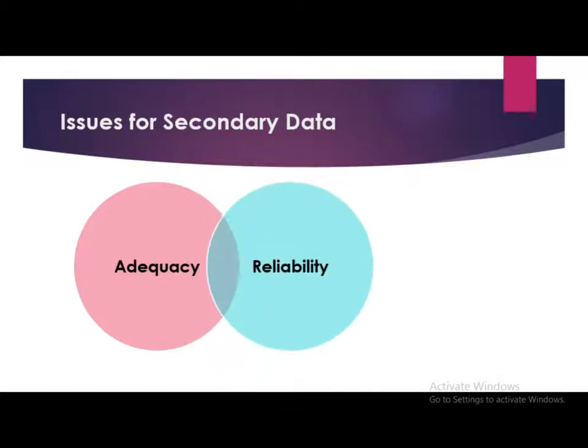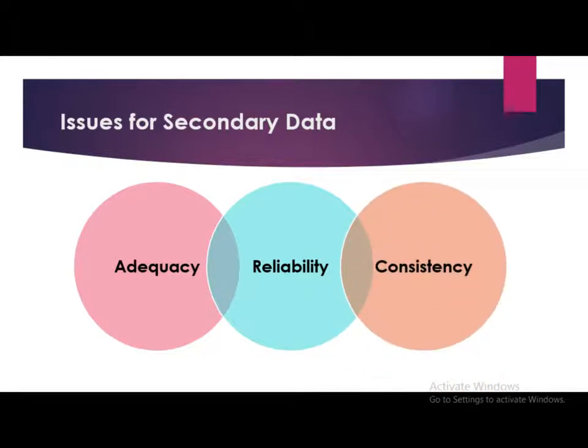Data reliability is a state that exists when data is sufficiently complete and error-free to be convincing for its purpose and context. In addition to being reliable, data must also meet other tests of evidence. The third issue is consistency — data consistency refers to the usability of the data, and is often taken for granted in a single-site environment. Data consistency problems may arise even in a single-site environment during recovery situations, when backup copies of production data are used in place of the original data.